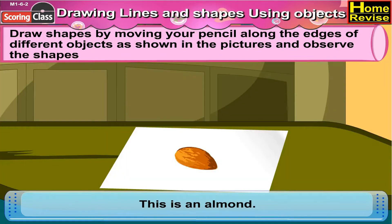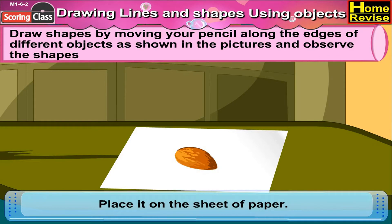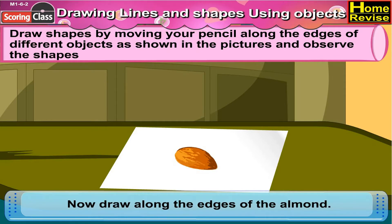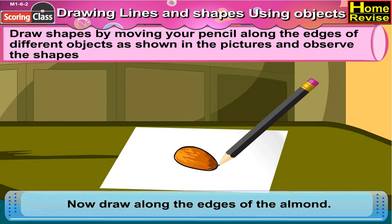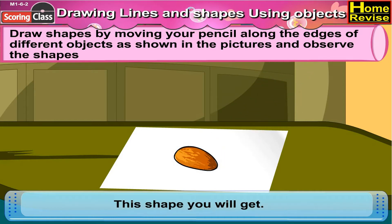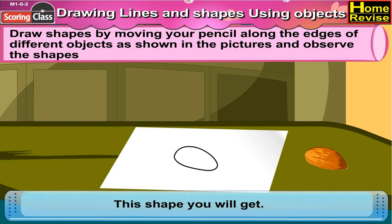This is an almond. Place it on a sheet of paper. Now draw along the edges of this almond. Yes, this is the shape you will get.